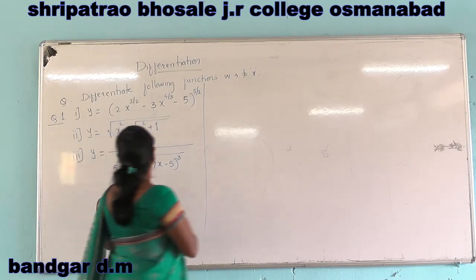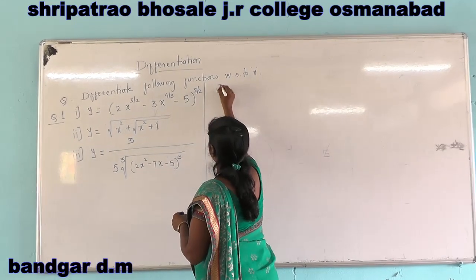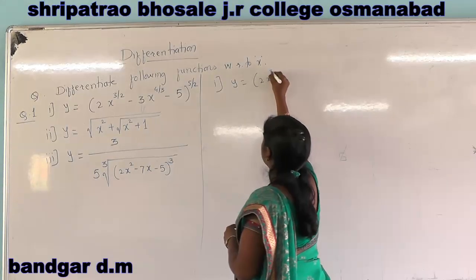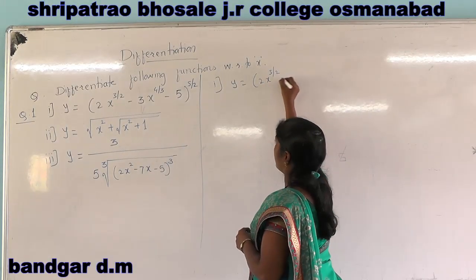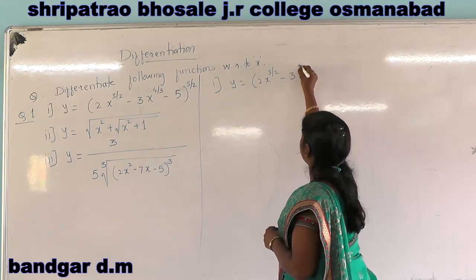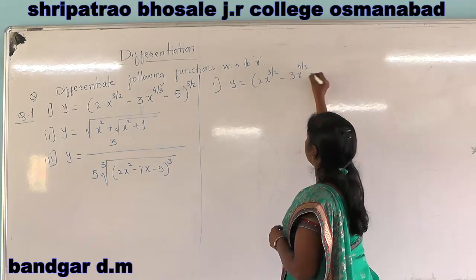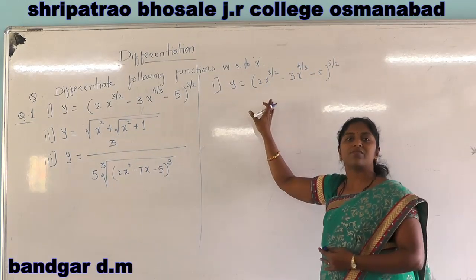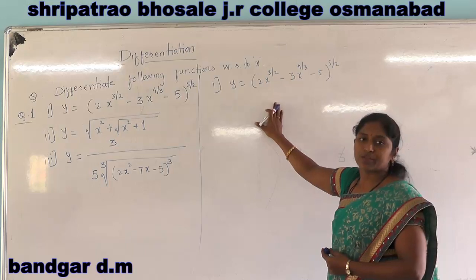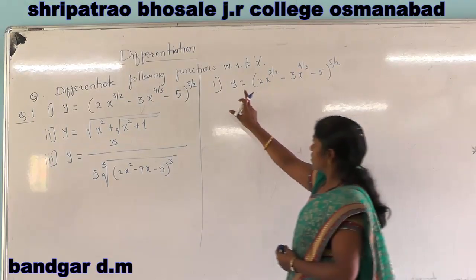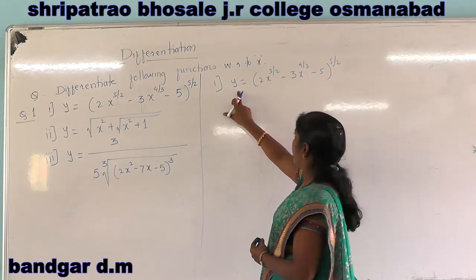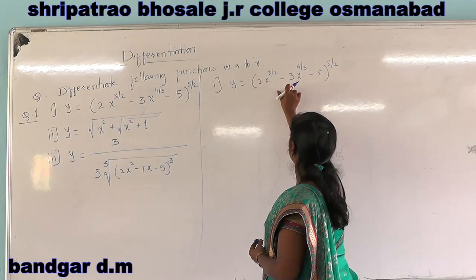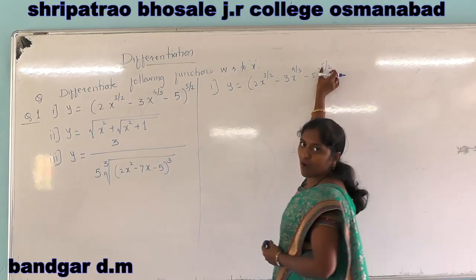Given y is as follows: y is equal to 2x raised to 3 by 2, minus 3x raised to 4 by 3, minus 5 raised to 5 by 2. We have to differentiate this y with respect to x using the function raised to constant form.